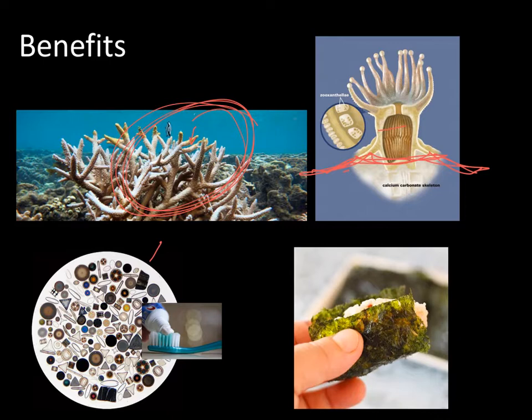We also have diatoms. They're made out of silica, and they are very abrasive due to the silica. They used to be used in toothpaste — the abrasive quality is what rubs away at your teeth in order to get off all that bacteria.